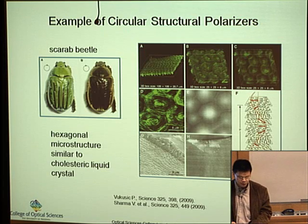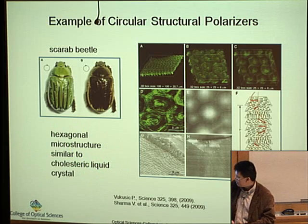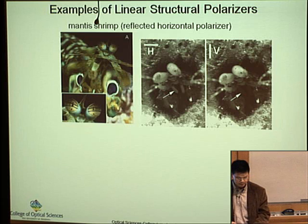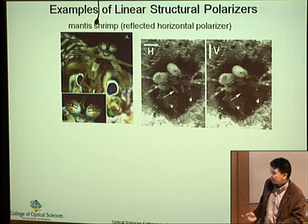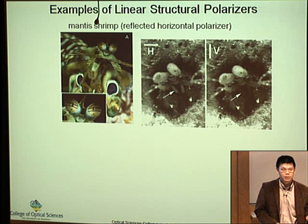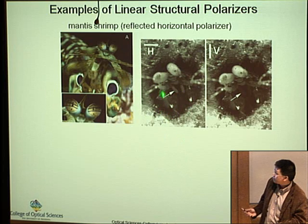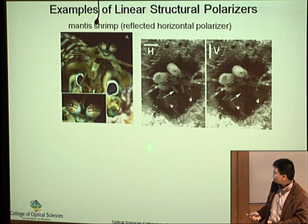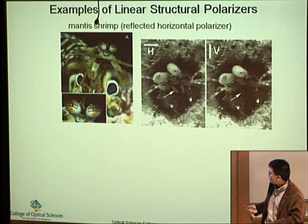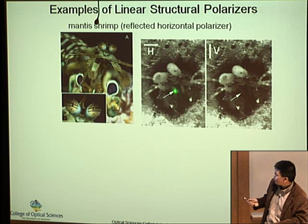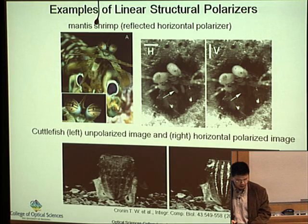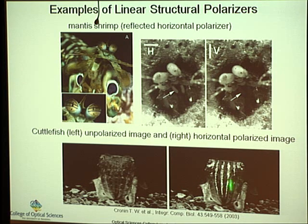We want to build structures that mimic this beetle exoskeleton using liquid crystal. Although the human eye cannot see polarization, other animals can. For example, the mantis shrimp has receptors that can see different polarizations — they communicate by wiggling their antennae, and depending on the polarization, the signal is visible or not. Cuttlefish can also see polarization; their skin acts like an LCD display, and they communicate by changing colors and polarization patterns on their skin.